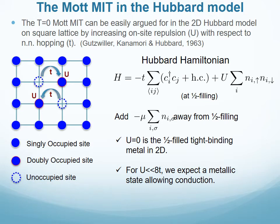The Hubbard Hamiltonian has a tight-binding nearest-neighbor hopping term with strength T, an on-site repulsion term with strength U reflecting the cost of a double occupancy, and a chemical potential that determines the filling of the electrons. For no on-site repulsion, this is simply the problem of tight-binding electrons in the 2D square lattice. We also expect a weakly correlated metal for on-site repulsion much smaller than the tight-binding bandwidth of 8T.